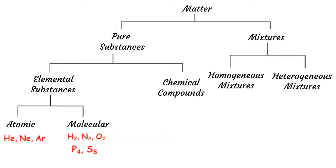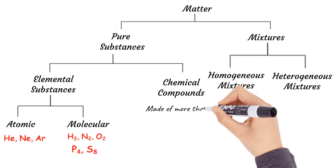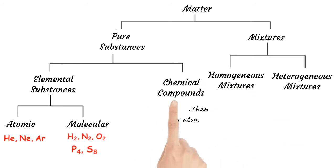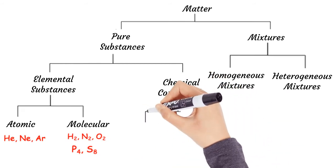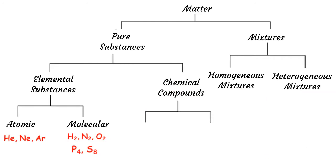Chemical compounds are made of two or more types of atoms. Chemical compounds can be divided into two groups: molecular compounds and ionic compounds.